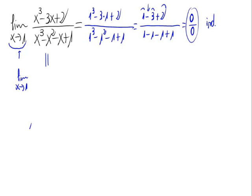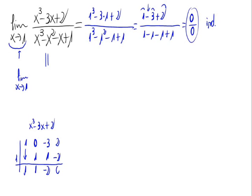Let's go first with the numerator, x cubed minus 3x plus 2. Using Ruffini's rule, the coefficient of x cubed is 1. As there's no x squared, we have a 0 there, minus 3 with x, and the independent term is 2. Let's try with 1. So, 1 times 1 is 1, 0 plus 1 is 1, 1 times 1 is 1, minus 3 plus 1 is minus 2, minus 2 times 1 is minus 2, and 2 minus 2 is 0.